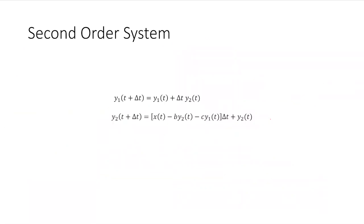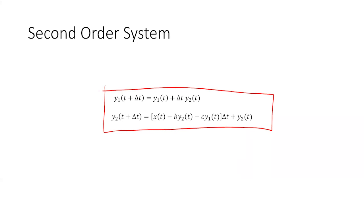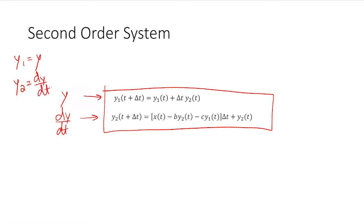After going through that whole process, I'm left with two equations. One solves for y2 — the derivative dy/dt. The other solves for y1, which is y itself. Our original definitions were y1 = y and y2 = dy/dt. What I care about is y, but I had to break it up into two separate equations to handle the second derivative. For a third-order system, I would need three equations.